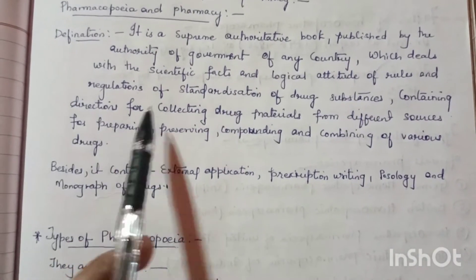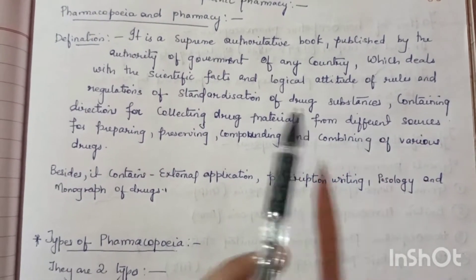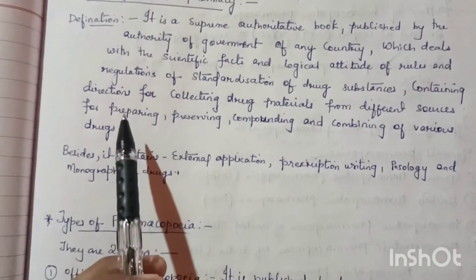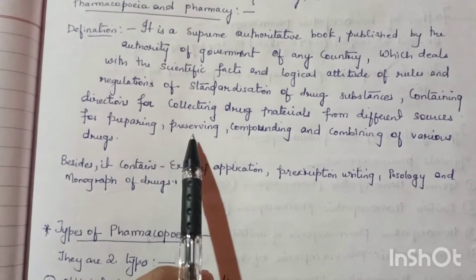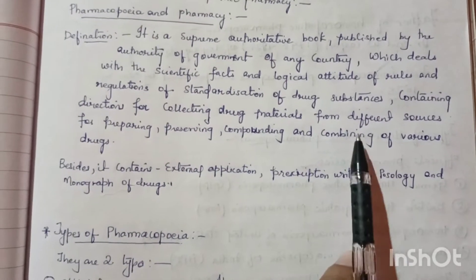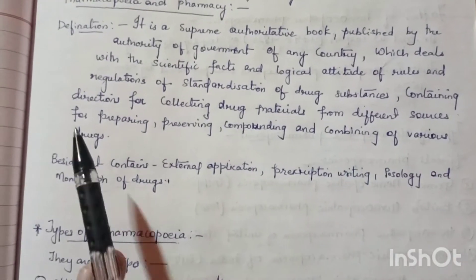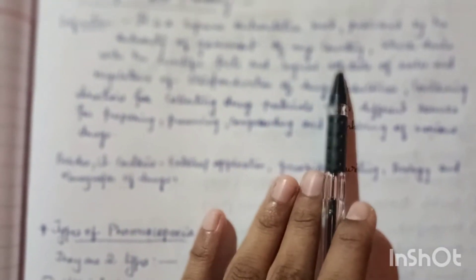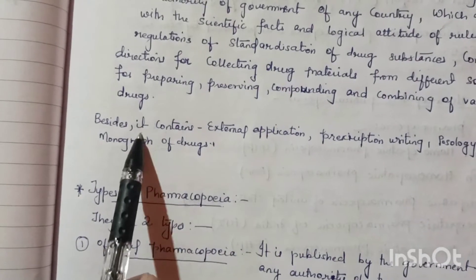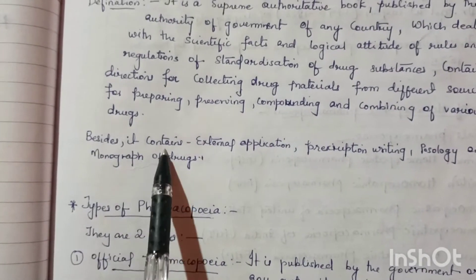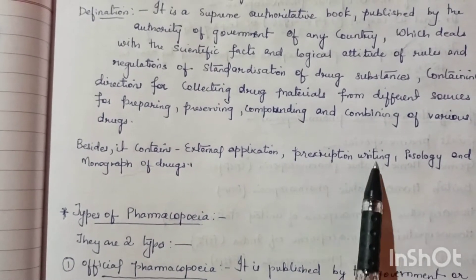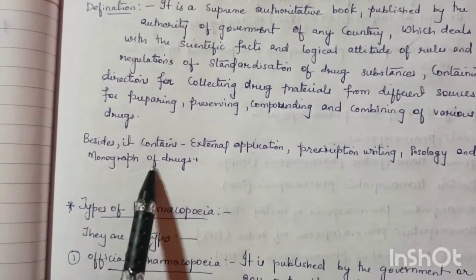It covers how many drugs, different sources of drugs — collect them, prepare them, preserve them, and compounding and combining of various drugs. These are all published in pharmacopoeia. Besides preserving and preparing, it also contains external application, prescription writing, pathology, and monograph of drug.